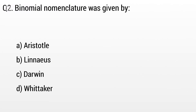Question 2. Binomial nomenclature was given by: Option A: Aristotle, B: Linnaeus, C: Darwin, D: Whittaker. The right answer is option B, Linnaeus.